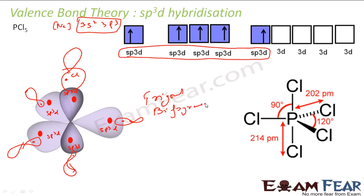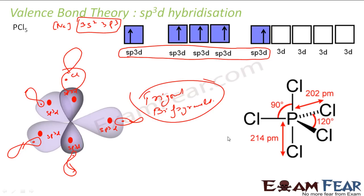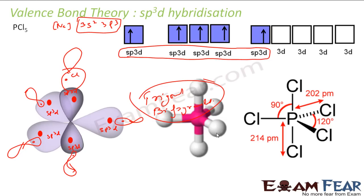This shape was not explained by VSEPR theory, but using valence bond theory we can easily explain the structure of PCl5. This is how PCl5 works.